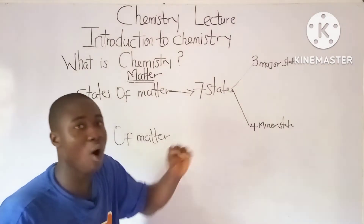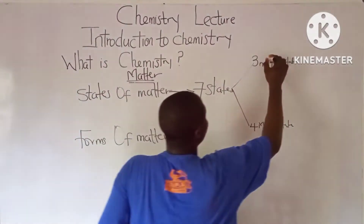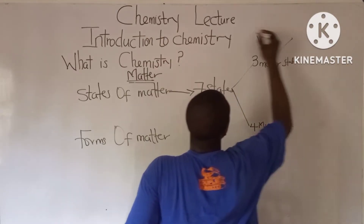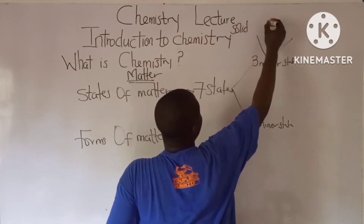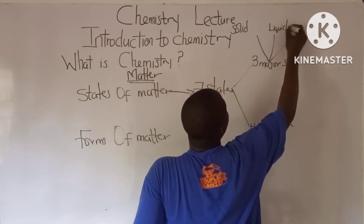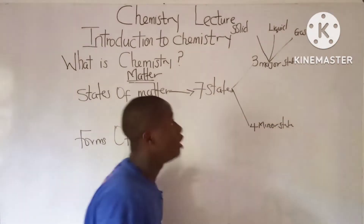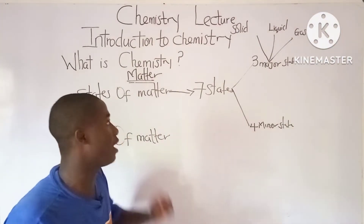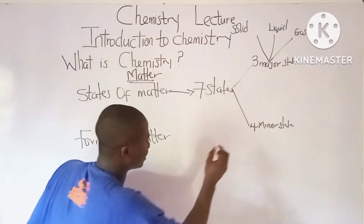What are the major states of matter? There are three: the first is solid, after solid we have liquid, and after liquid we have gas. So we have three major states of matter.